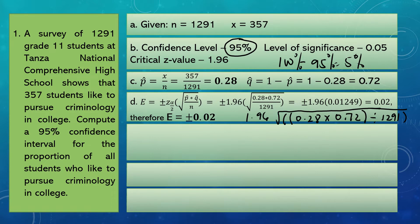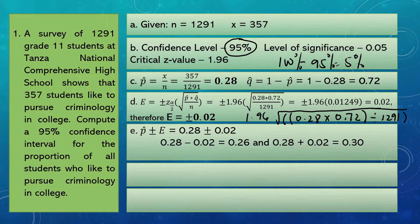The value of the margin of error is plus or minus 0.02. The margin of error and P-hat are used to find the confidence interval estimation for population proportion. We compute P-hat plus or minus E: 0.28 plus or minus 0.02. Separating plus and minus: 0.28 minus 0.02 equals 0.26, and 0.28 plus 0.02 equals 0.30. Therefore, the confidence interval estimation for the proportion of all students who like to pursue criminology in college is from 0.26 to 0.30.